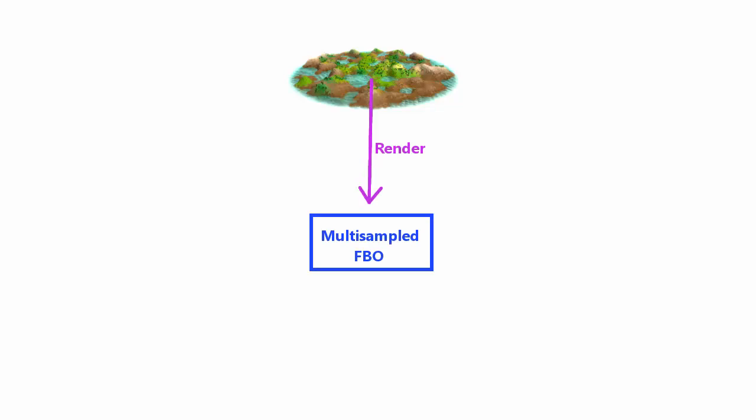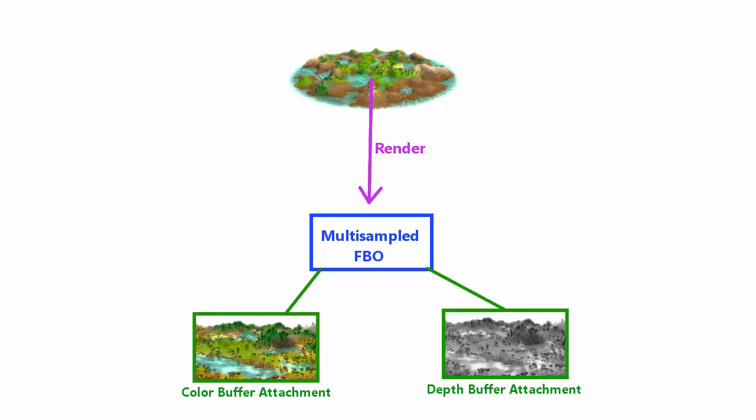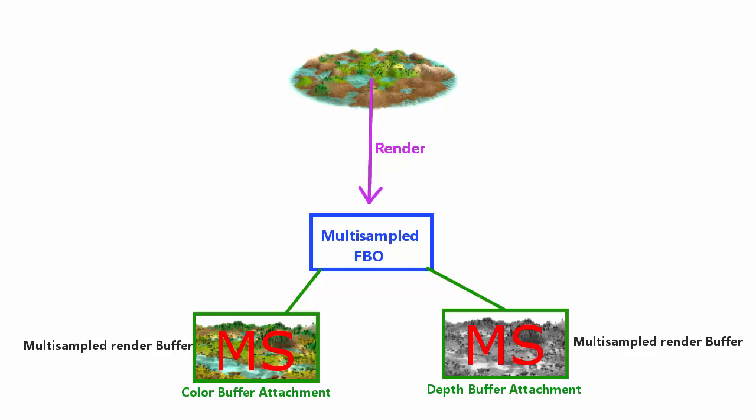Hopefully you remember that when we create FBOs we add various attachments to them, such as a colour buffer and a depth buffer, and creating a multisampled FBO is no different. We still have to add a colour buffer attachment and a depth buffer attachment, and we're going to be using render buffers for these attachments because we won't need to sample them in the shaders.